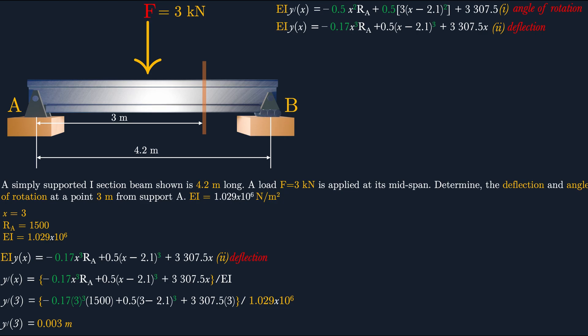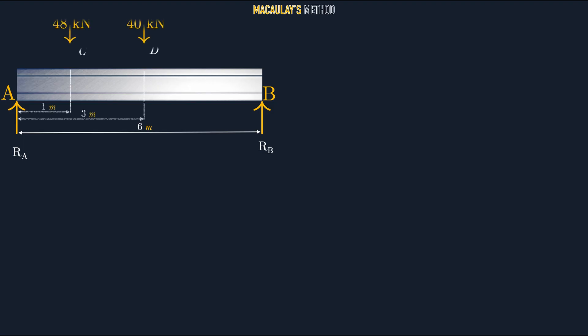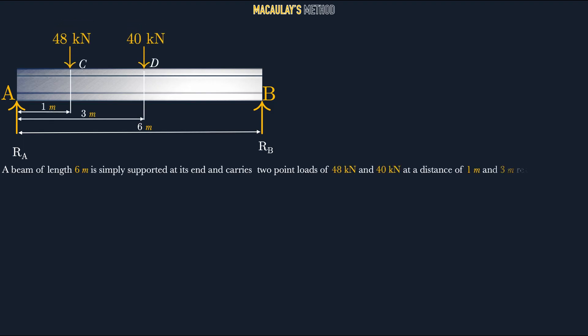As you notice, this method is very long and tiresome. Just imagine if we have several point loads — that's why we have Macaulay's method, which is very useful when we have a beam with several loads. New example: a beam of length 6 meters, simply supported at its ends, carries two point loads of 48 kN and 40 kN at distances of 1 meter and 3 meters respectively from the left support A. Find the deflection under each load, given E = 2 × 10⁵ N/mm² and I = 85 × 10⁶ mm⁴.